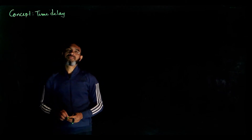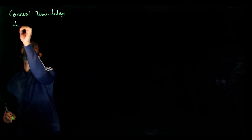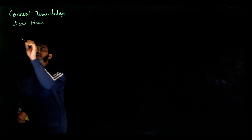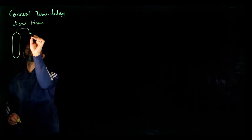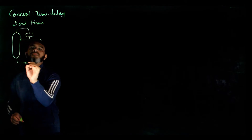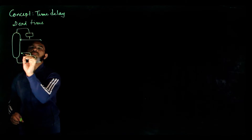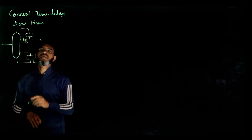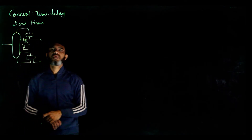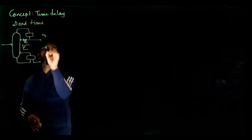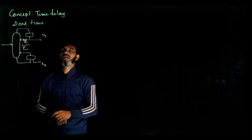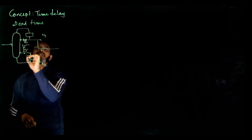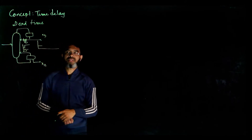In this session we introduce the concept of time delay, also known as dead time. Let us take a simple example of a distillation column. Suppose you make a change in the reflux flow. There will be a change in both xd and xb. If you made a change in the reflux flow at some time t0, the distillation xd was at some value and will change to another steady value.